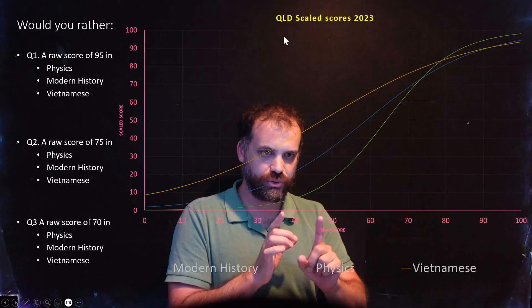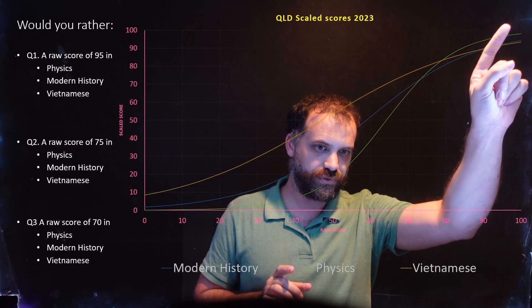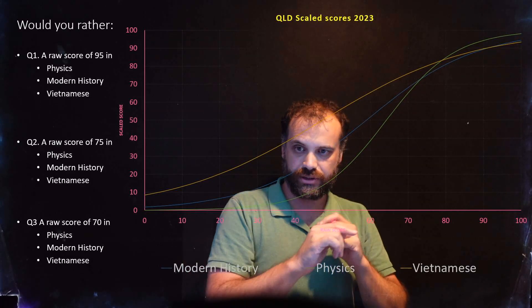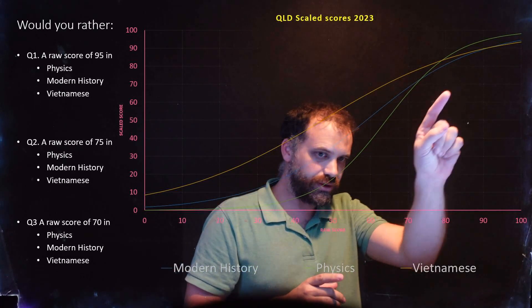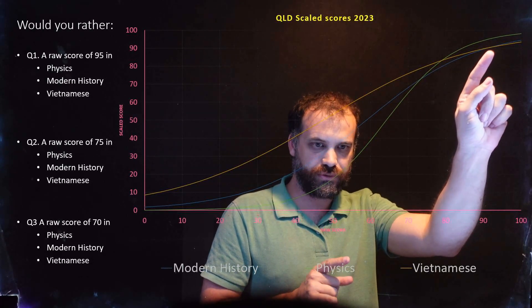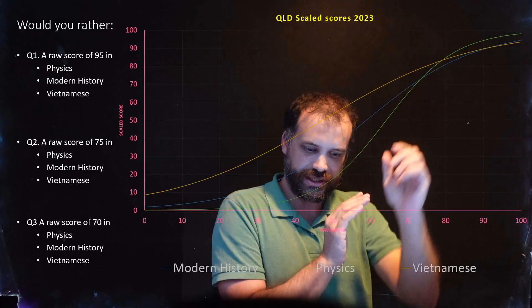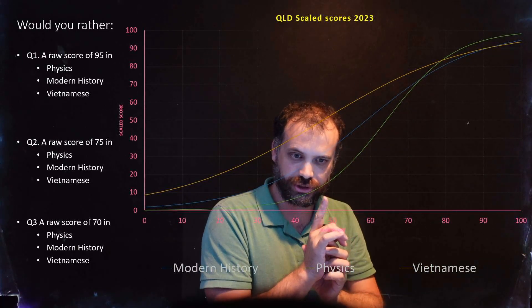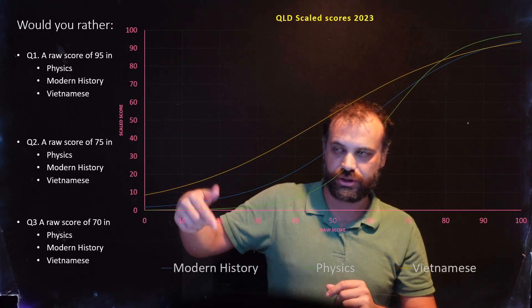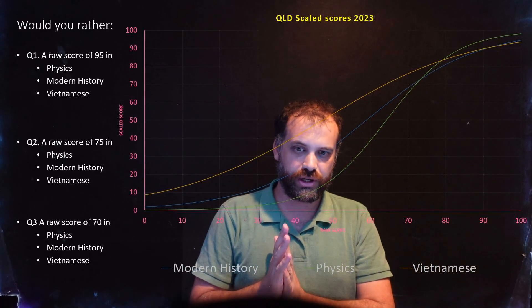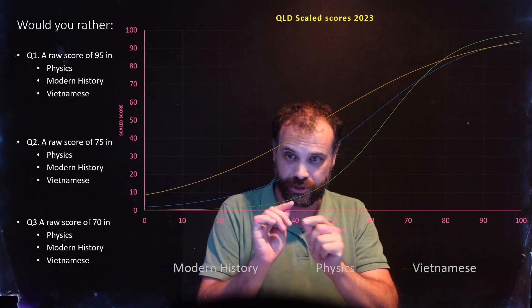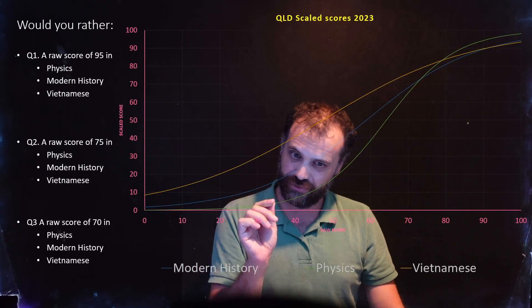If you're getting a raw score of 95, you're all the way up here. Physics is that green line. I'd rather be doing physics. I'm not going to zoom right in on this, but I'm going to get you to take my word for it. That blue line is just above that orange line, and the blue line is modern history. So when I'm thinking raw score of 95, I want to do physics. And then modern history and Vietnamese are almost tied, but modern history is just in front.